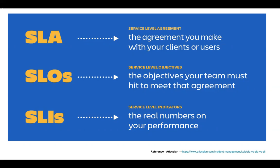The second thing is SLO — Service Level Objective. With SLO, for every promise you make to your customer, you go back and define some objectives within your team. For example, if you promised your customer that your service is available 99% of the time, you define an internal objective that your service is available at least 99.5% of the time — slightly higher than your promise.